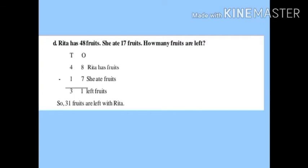Next story: Rita has 48 fruits, she ate 17 fruits — how many fruits are left? 'Ate' means consumed. The word 'left' tells us to do subtraction. Arrange the numbers: 48 minus 17. Start from ones: 8 minus 7 is 1; tens: 4 minus 1 is 3. Answer is 31.